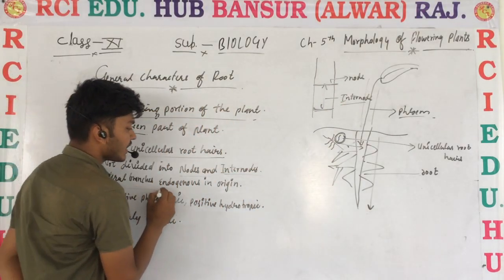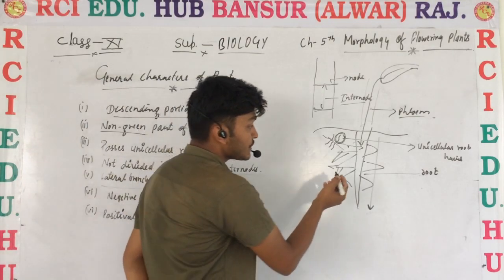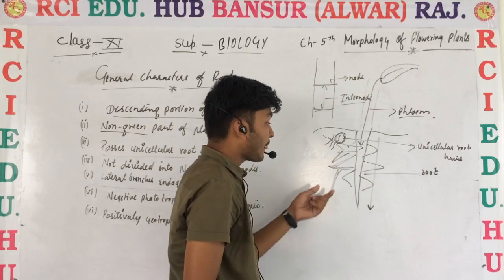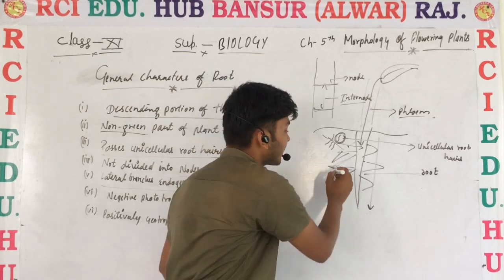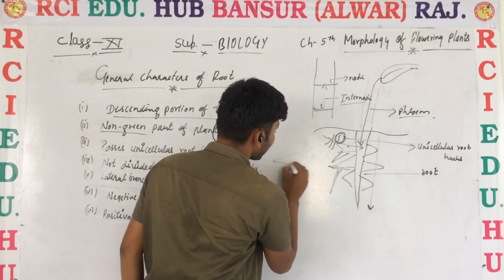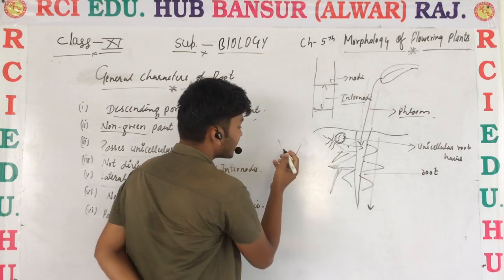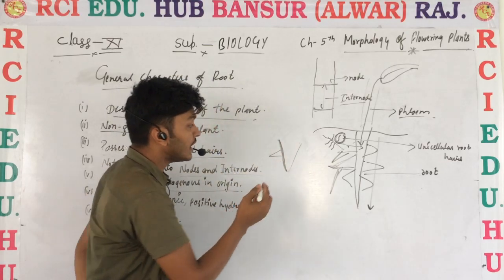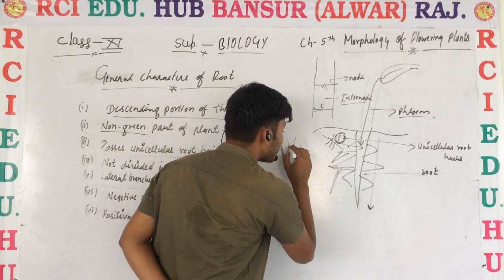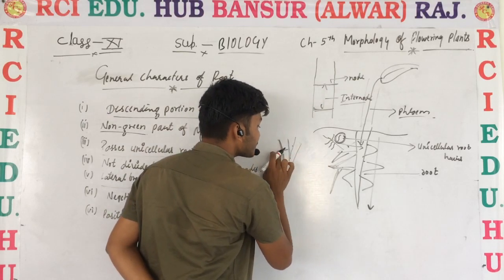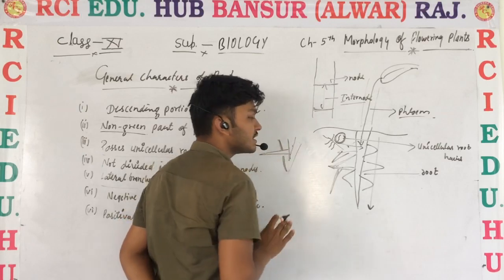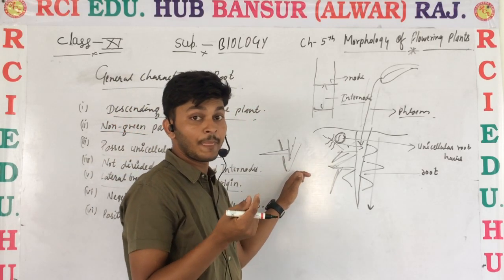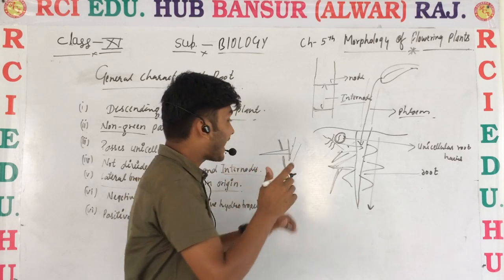The lateral branches of the root are endogenous in origin, meaning they arise from inside the root. This is the primary root, and its branches are endogenous. We will also discuss this in relation to the stem, where the lateral branches are exogenous in origin.